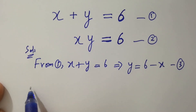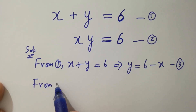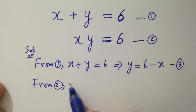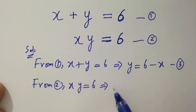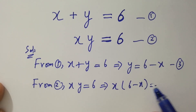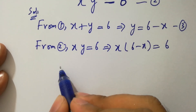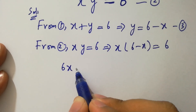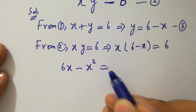Now from the second equation, xy equal to 6. Put the value of y: x times (6 minus x) equal to 6.